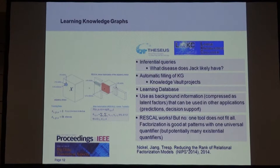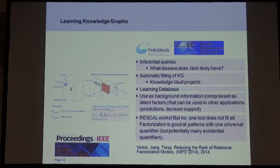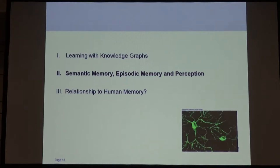Of course it's not the complete solution — not one tool fits all. Factorization is good at patterns with one universal quantifier, like 'if you like this, you also like that.' But it's bad if you have more than one universal quantifier — for example, if A is married to B, then B is married to A, which involves 'for all A and for all B.' For these types of patterns you need rules. We introduced very simple rules from social networks, like the triangle rule, which improved the model and dramatically reduced the rank. You typically need a combination of things.